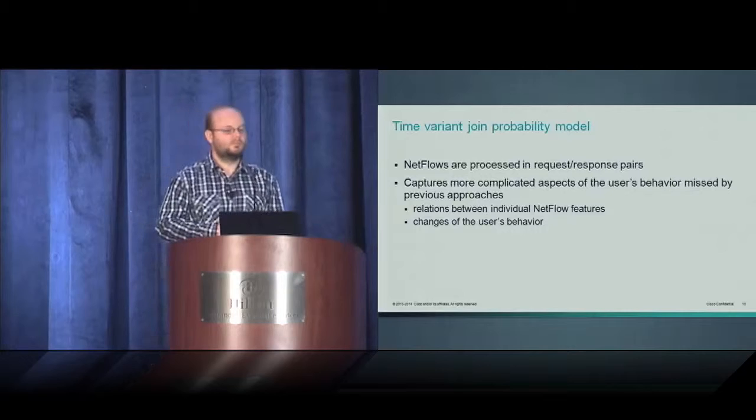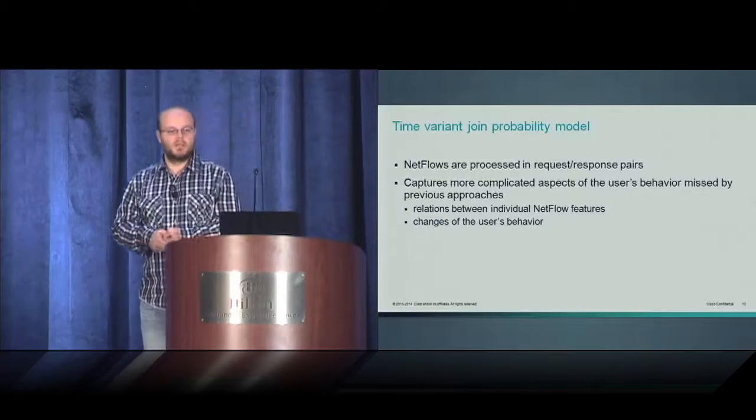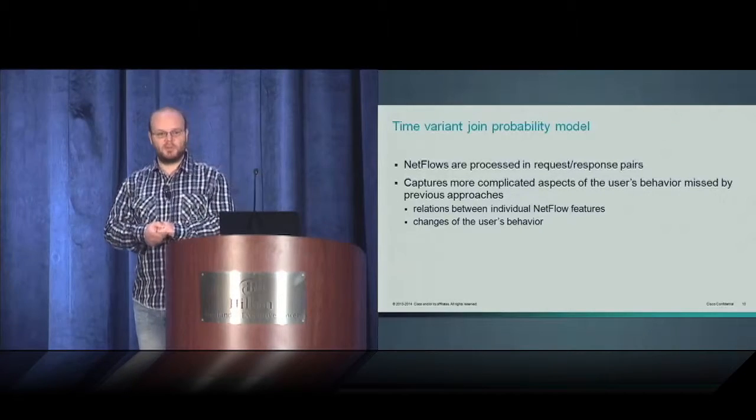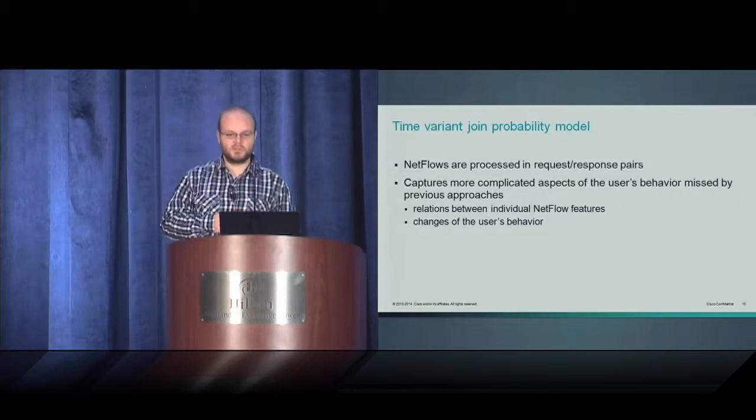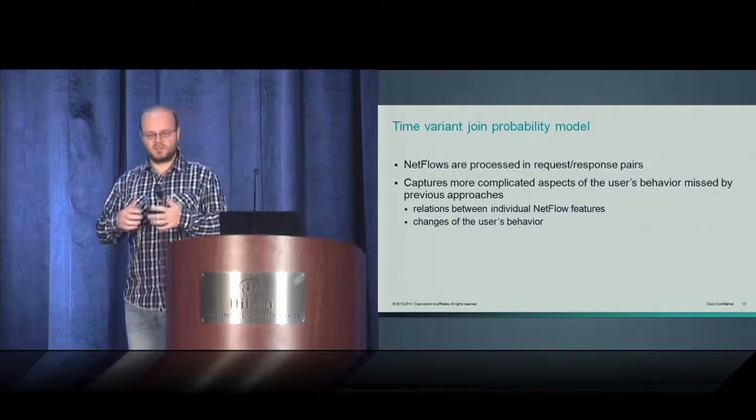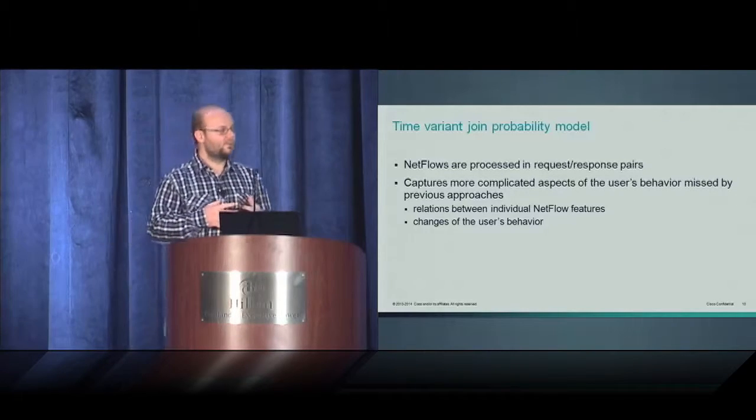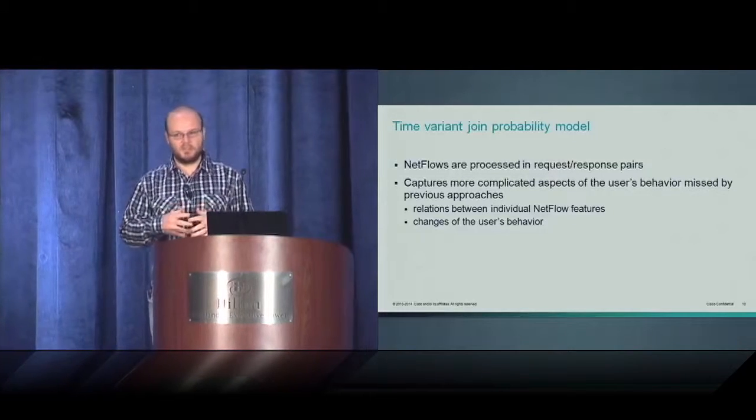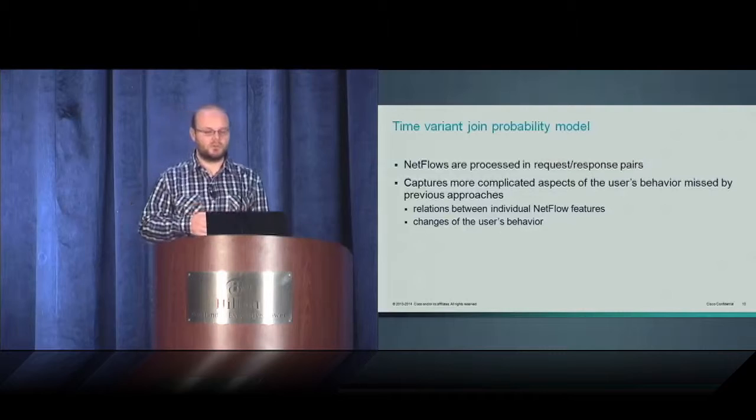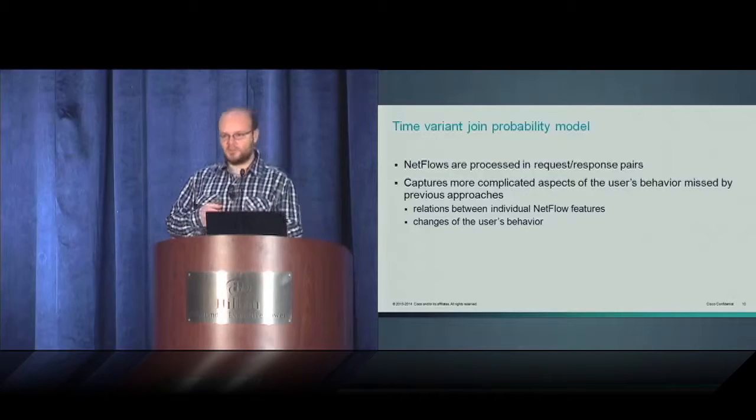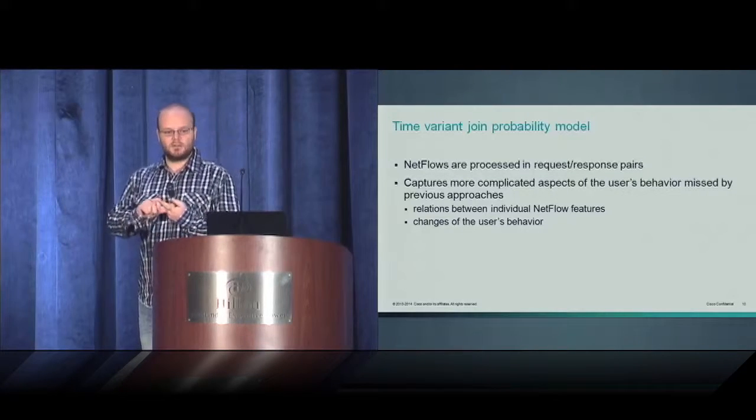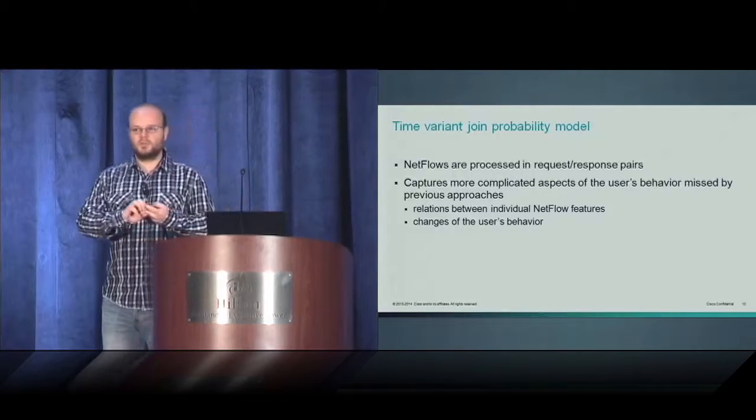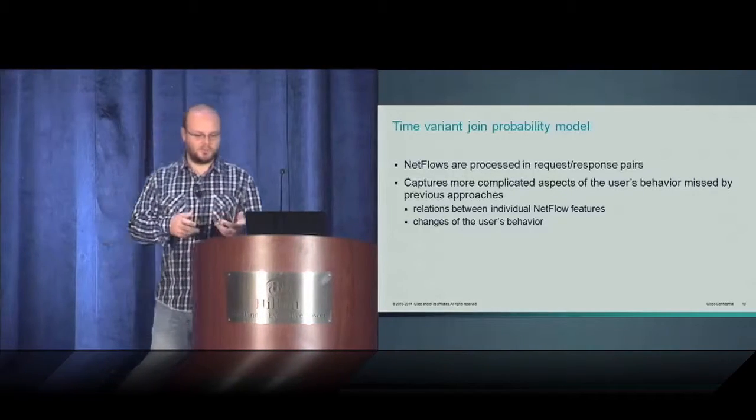The last approach, the most complicated and sophisticated one, is called time-variant joint probability model. Again, it uses NetFlow data that are processed in request-response pairs, and it is able to capture more complicated aspects of the user's behavior that is missed by the previous two approaches. Mainly, the relation between individual features and the changes of the user's behavior during the day, during the time.